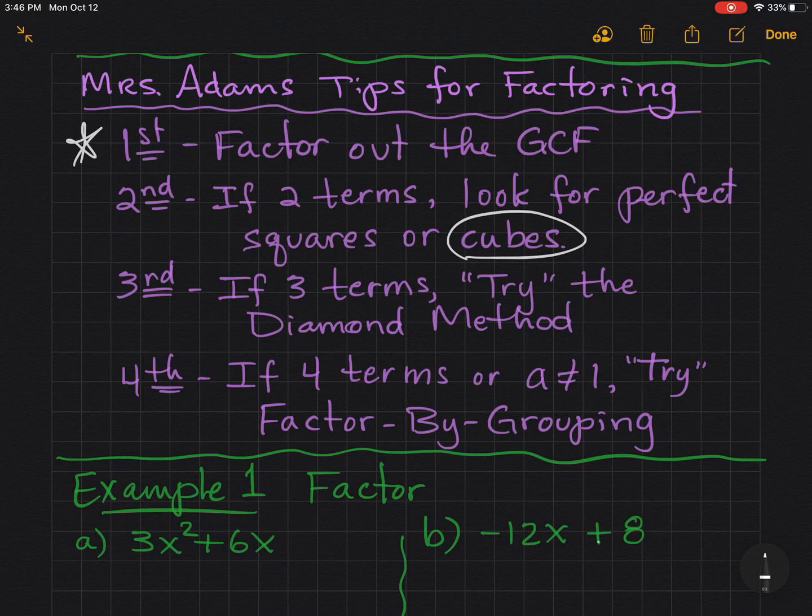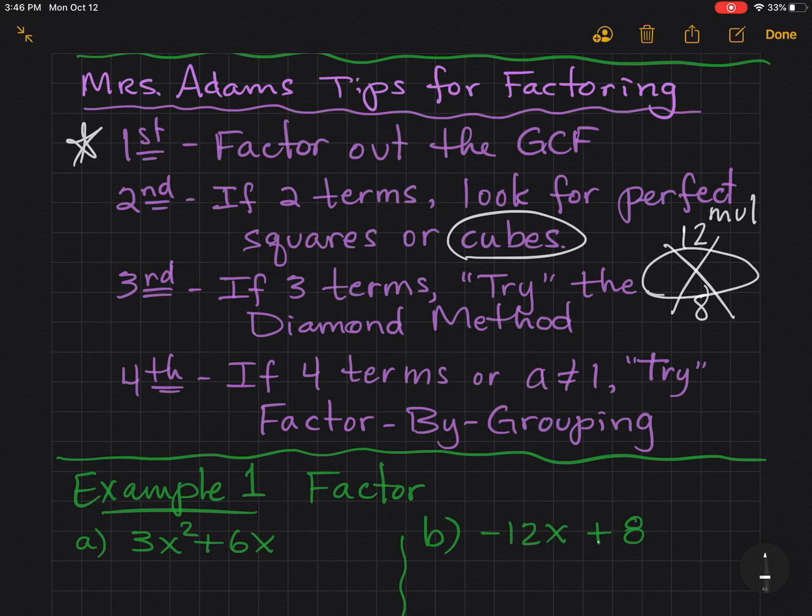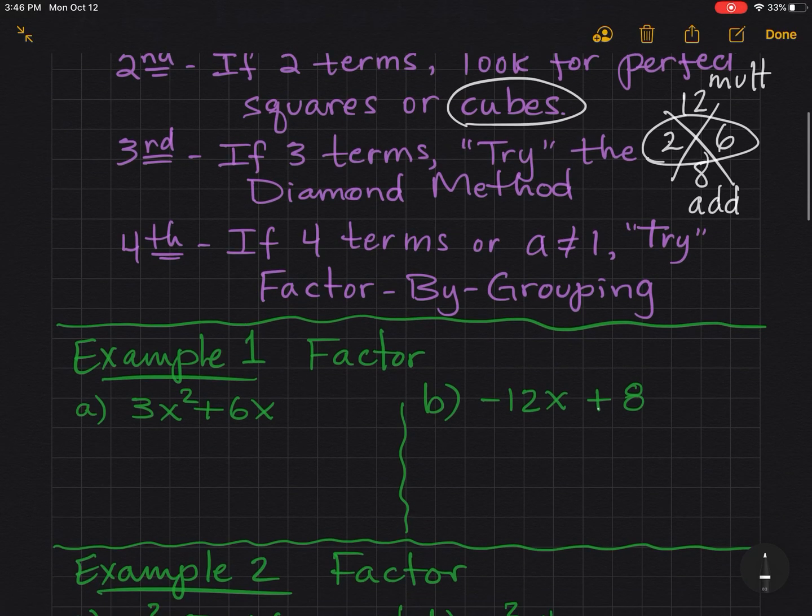If there are three terms, try the diamond method. You may recognize it where you put, like say you have a 12 here and an 8 here. You want to pick two numbers that multiply to the top number, but add up to the bottom number. So for this diamond, you would pick 2 and 6. 2 times 6 multiplies to 12, but adds up to 8. Fourth, if there are four terms or a is not 1, try factor by grouping.